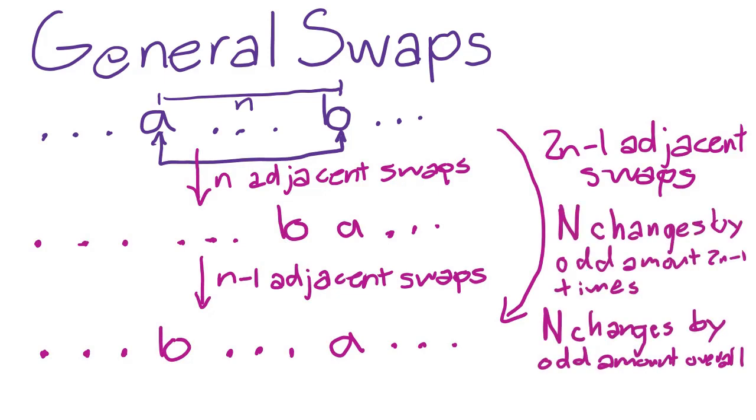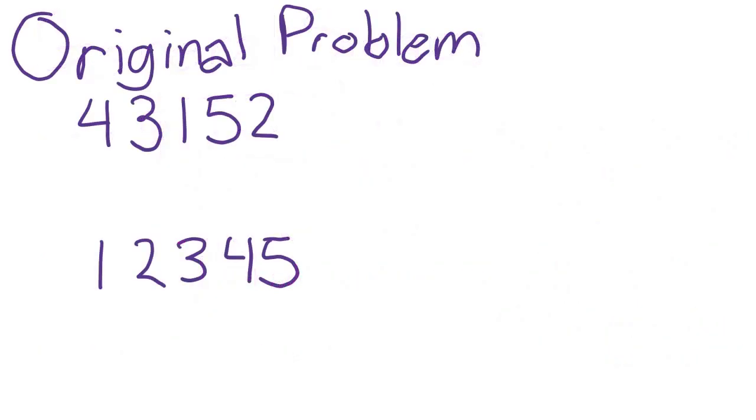So then an odd number of odd changes happens, which yields an odd change overall from the swap. So that completes the arbitrary swapping case. With that proved, we can now easily solve the problem.